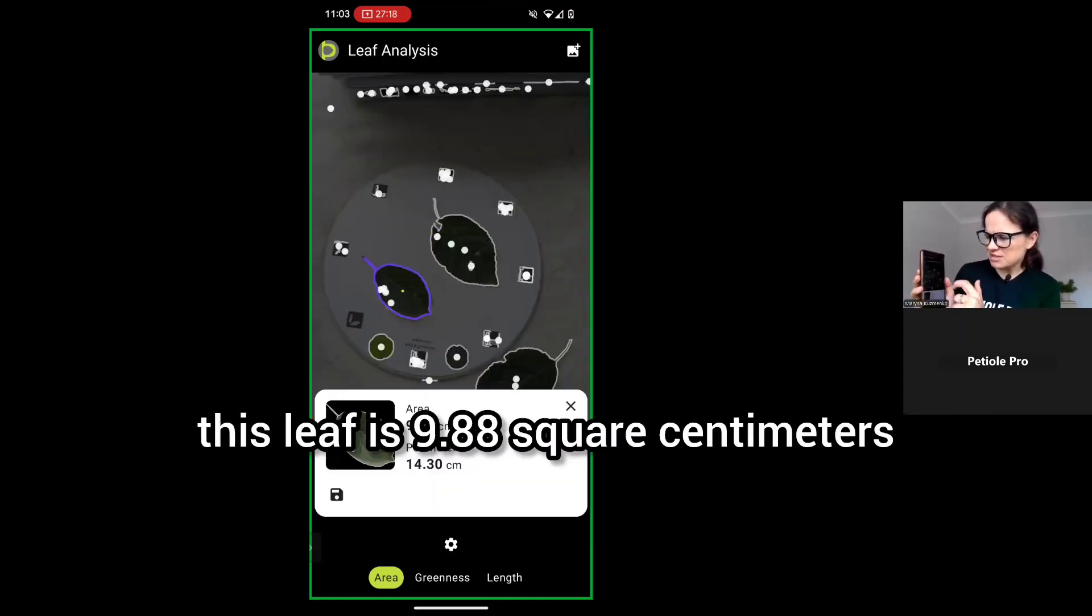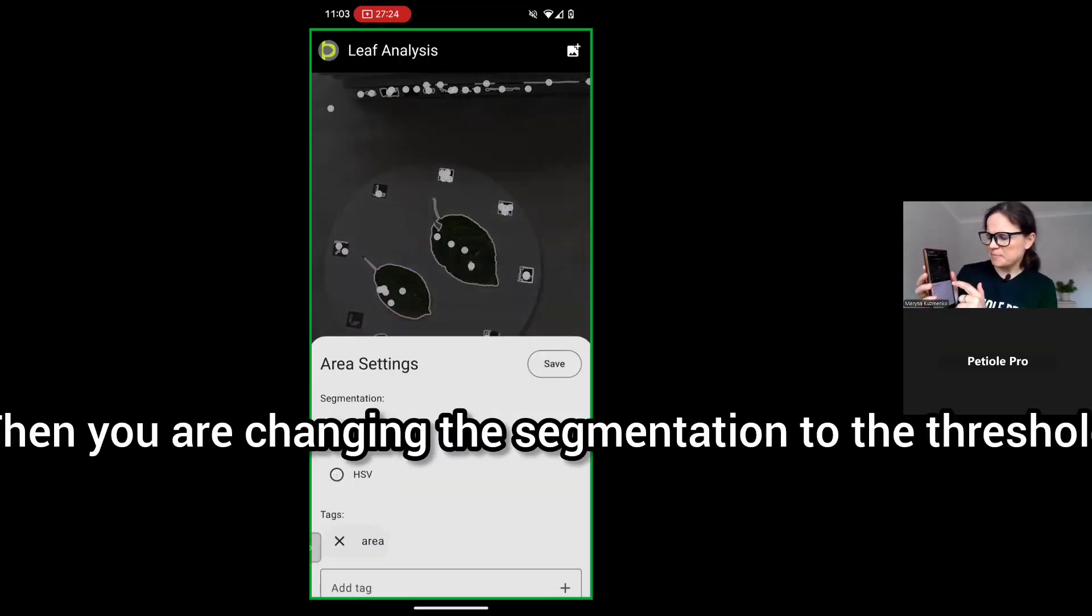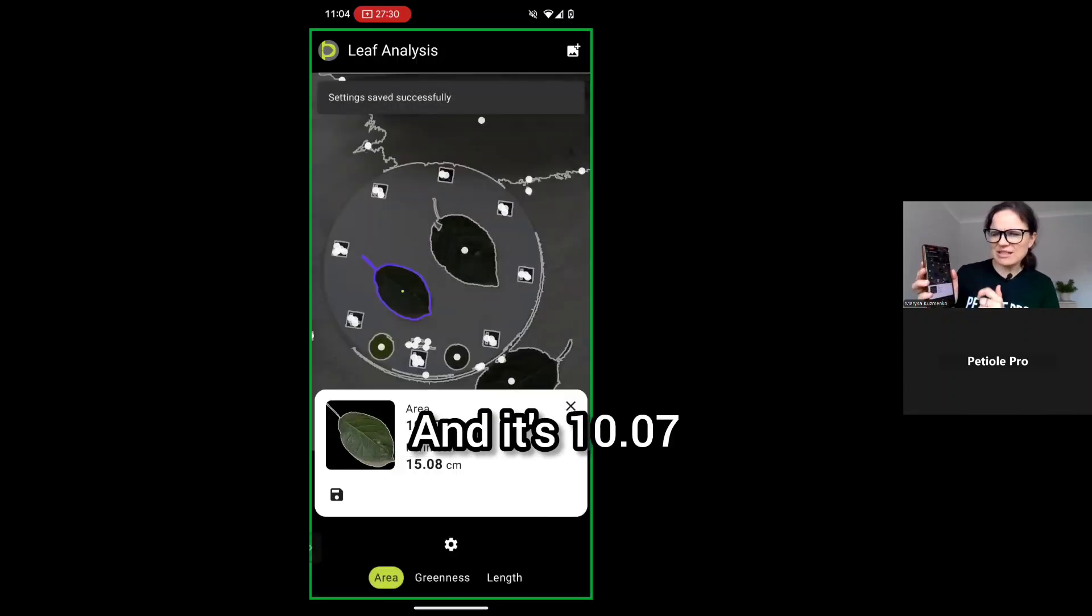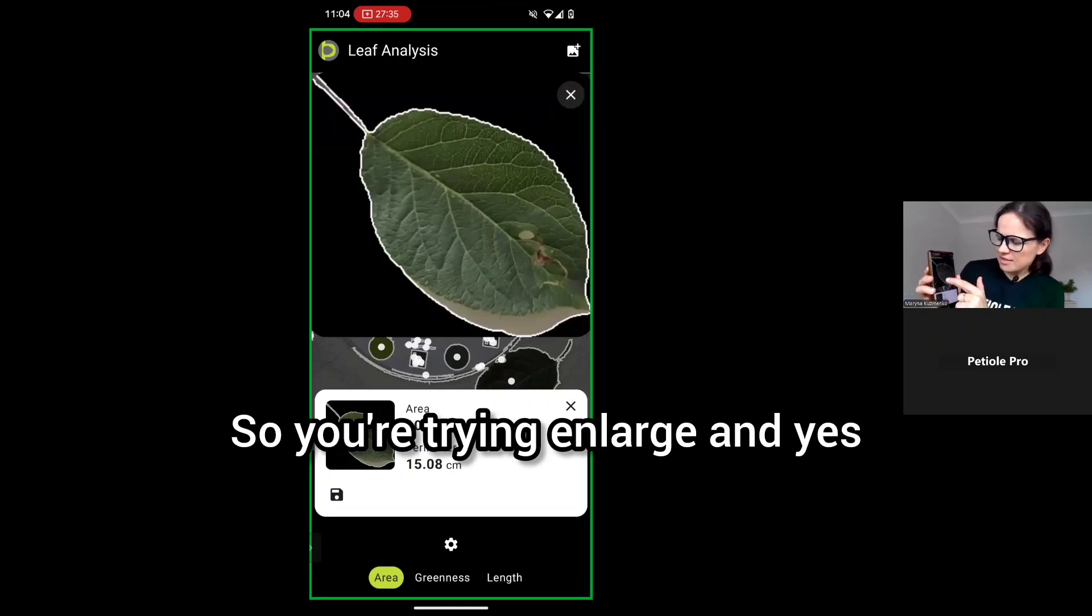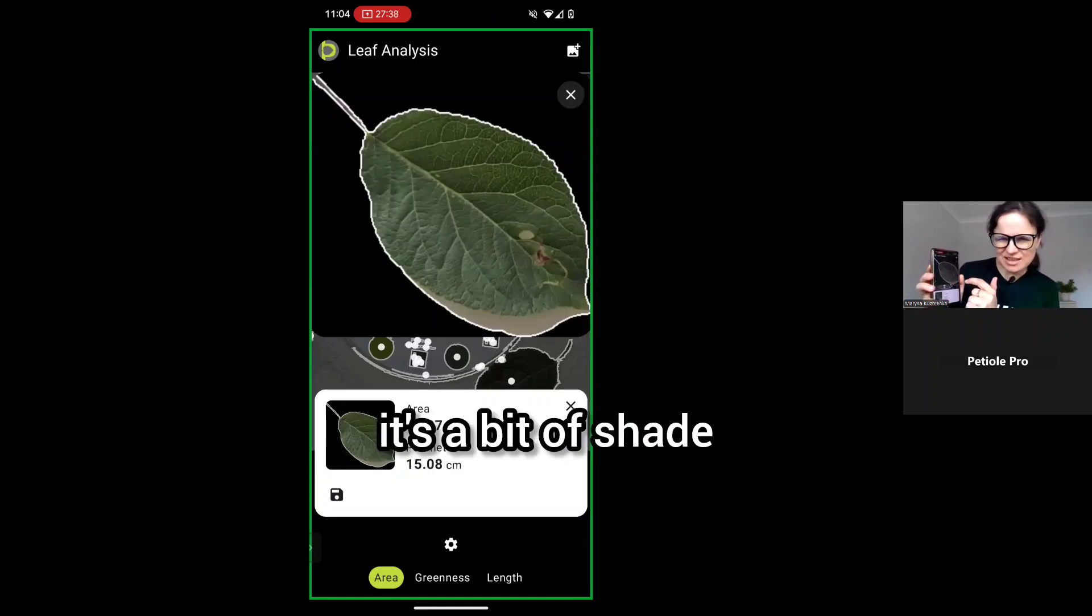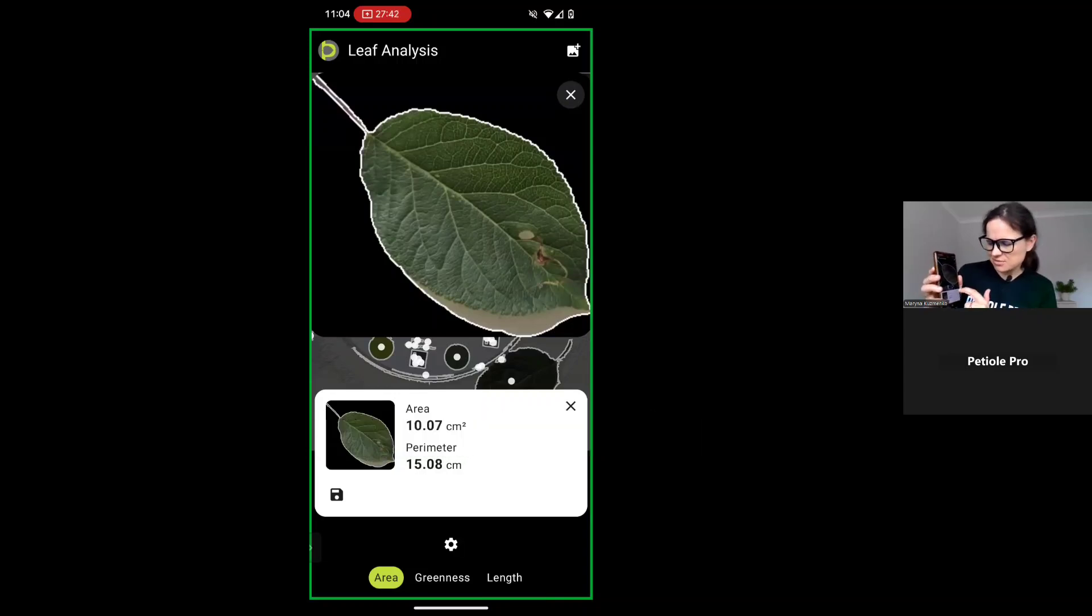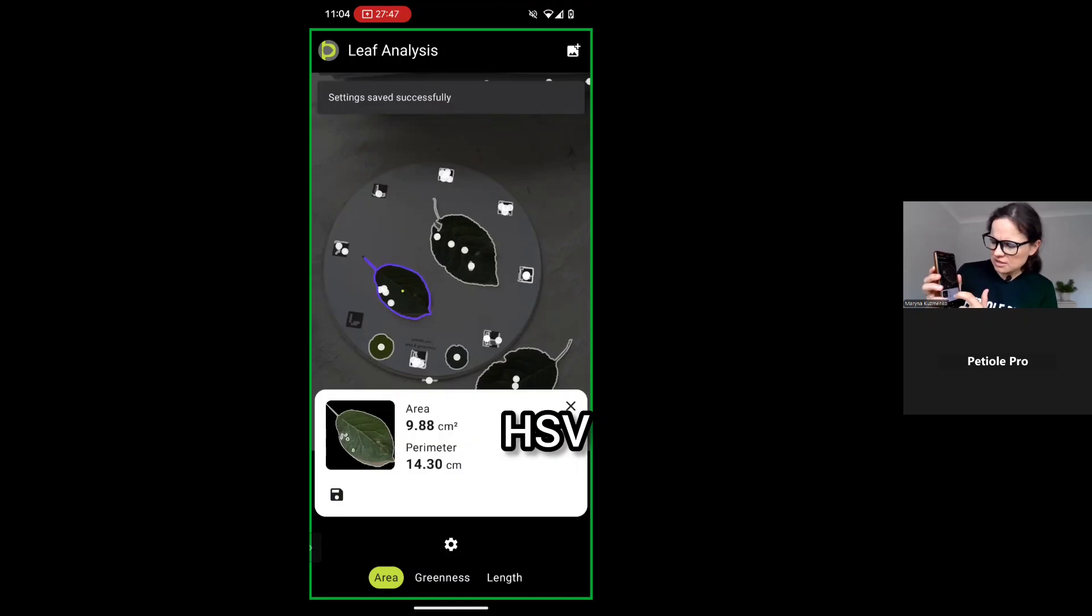For example, this leaf is 9.88 square centimeters. Then you are changing the segmentation into the threshold and checking again, and it's 10.07. You try enlarge and yes, you can see here it's a bit of shade which has been captured.